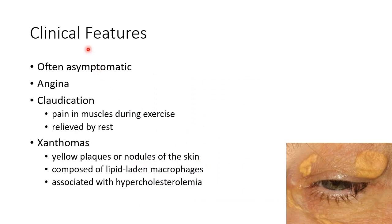Let us see about the clinical features of atherosclerosis. Atherosclerosis is often asymptomatic. There can be angina or claudication. Claudication is pain in muscles during exercise, which is relieved by rest. There can be xanthomas. Xanthomas are yellow plaques or nodules of the skin, composed of lipid-laden macrophages, and are associated with hypercholesterolemia. This picture shows xanthomas.